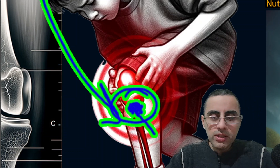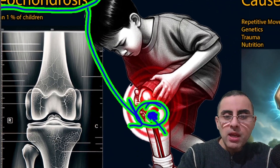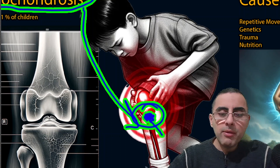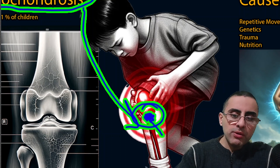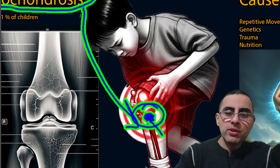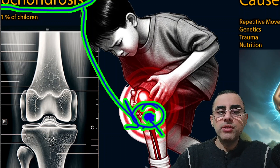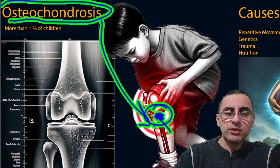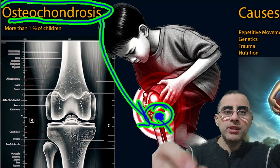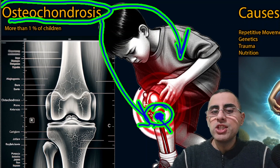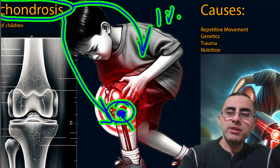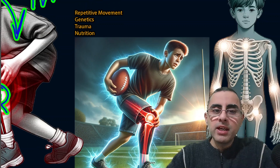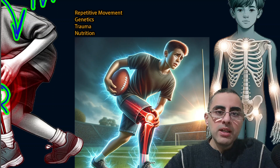This disruption causes inflammation and death of bone tissue. After some period of time, repairing and regeneration occurs and inflammation resides — that is the common resolution. Before this happens, it causes pain, swelling, discomfort, and loss of function of the joint. Osteochondrosis mainly affects children, around one percent of children.